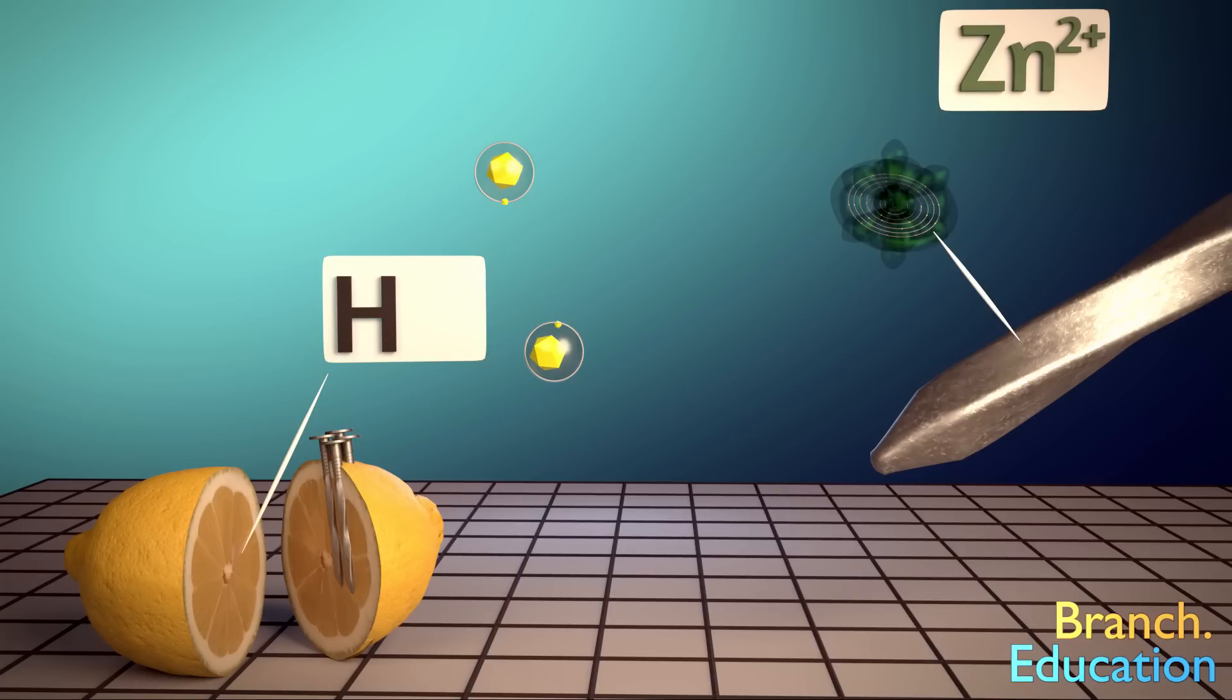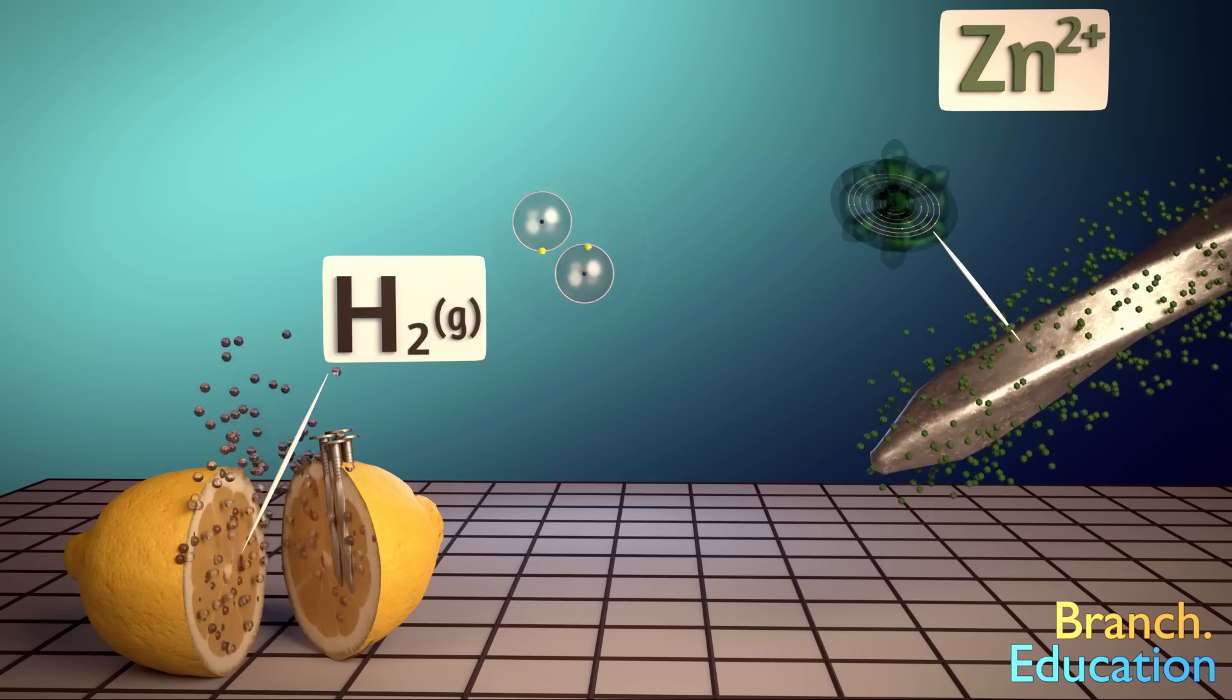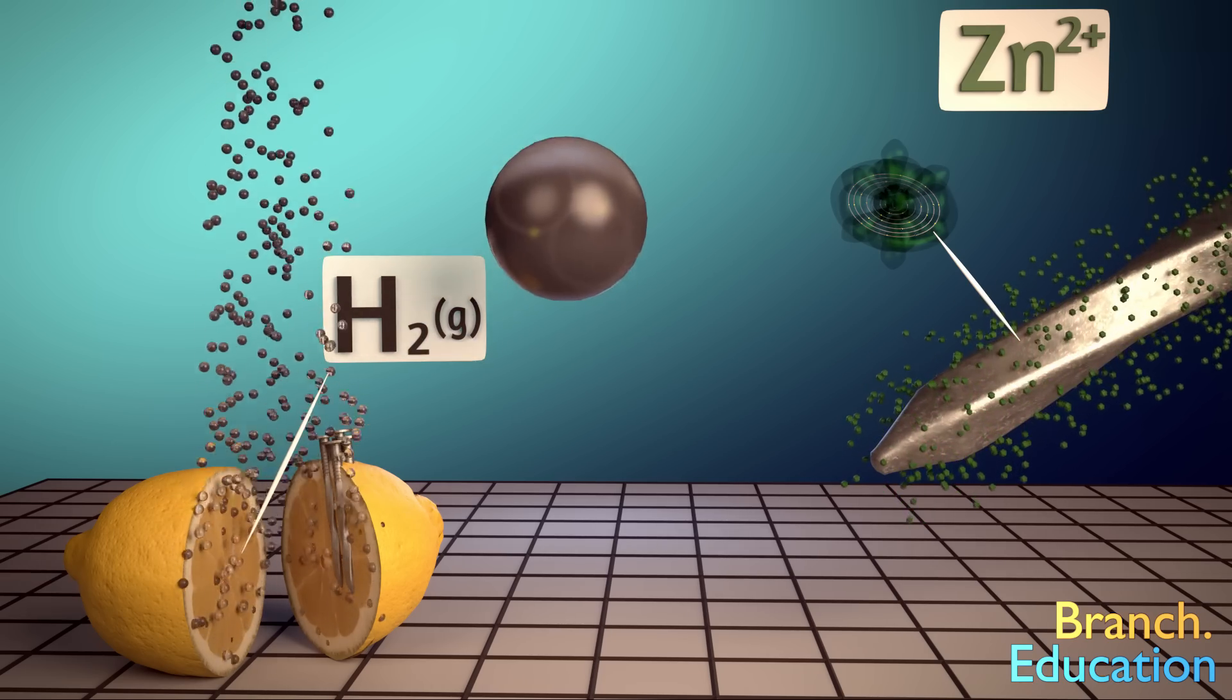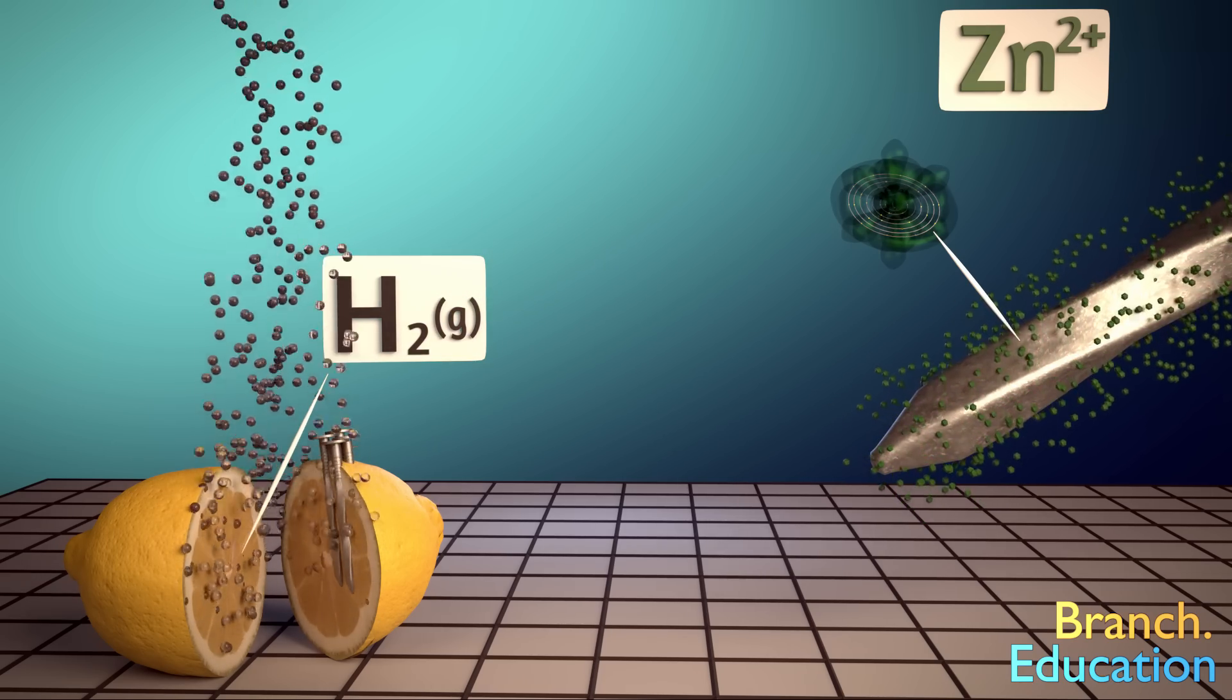As a result of this interaction, the zinc dissolves off the nail and becomes positively charged zinc ions, and the hydrogen ions become hydrogen gas and leave the lemon.